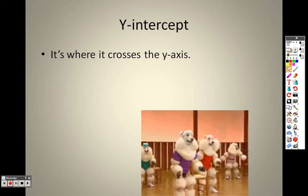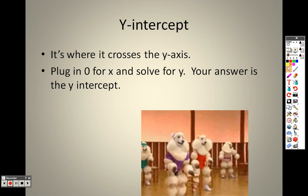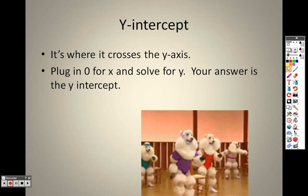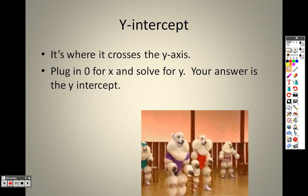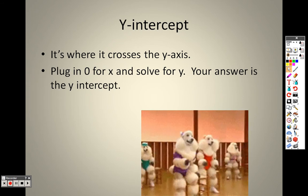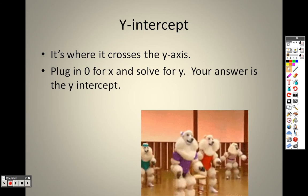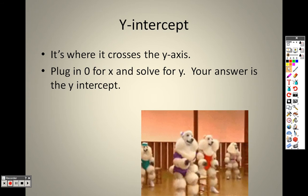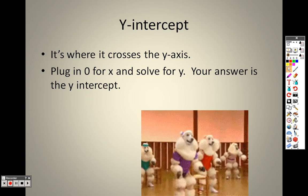The y-intercept is where it crosses the y-axis, which is very helpful to do these quick graphs. You plug in 0 for x and solve for y, and your answer is the y-intercept. So whenever you plug a 0 in for x and solve for y, that will give you the y-intercept. So if for some reason the y-intercept is not written by itself, you can still find it.